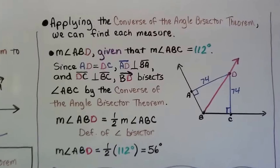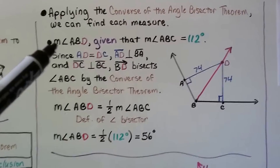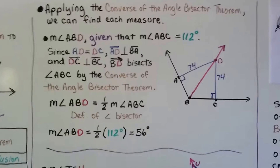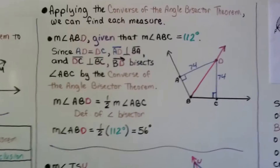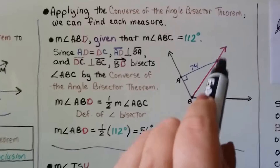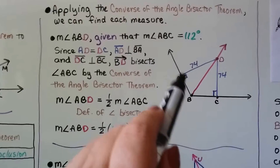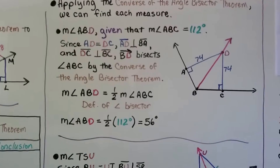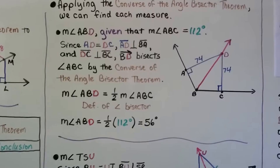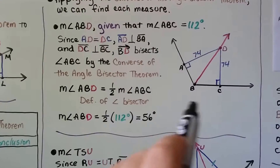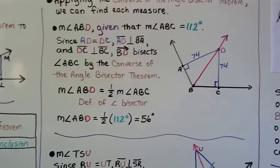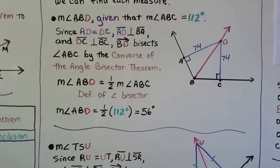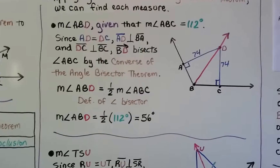Applying the converse of the angle bisector theorem, we can find each measure. We're looking for the measure of angle ABD, which is this right here. It's given that the measure of angle ABC is 112 degrees — this big black angle. Since AD, which is 74, is equal to DC, which is 74, and AD is perpendicular to BA, and DC is perpendicular to BC, BD bisects angle ABC by the converse of the angle bisector theorem. So the measure of angle ABD is equal to half of 112, which is 56 degrees.